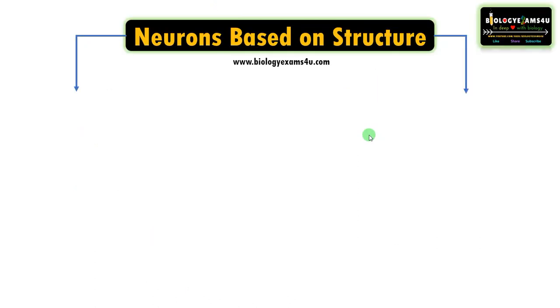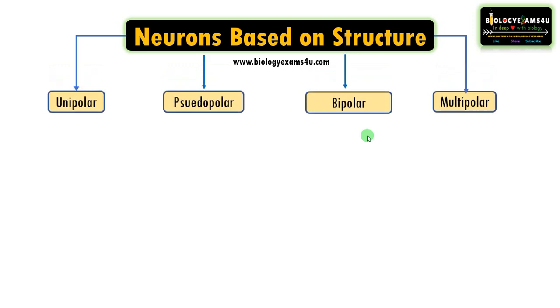Now let us understand the classification based on the structure of the neuron. Neurons are classified into unipolar, pseudopolar, bipolar, and multipolar neurons.